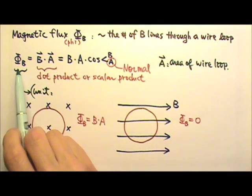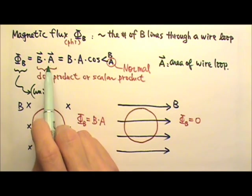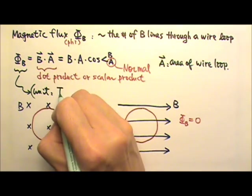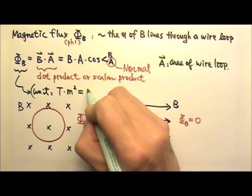The unit for magnetic flux B dot A is tesla times meter squared, and it gets a special name, Weber.